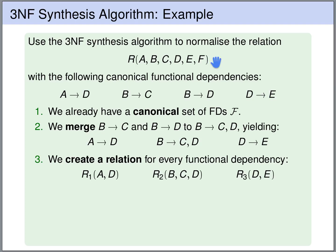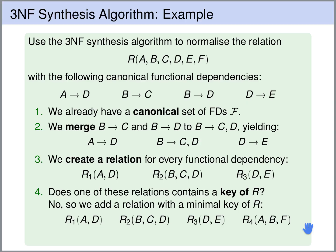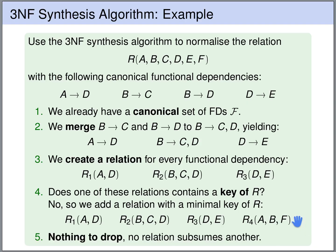So we add a new relation containing this minimal key, namely the attributes A, B, and F. So we have a fourth relation with the attributes A, B, and F. Now finally, we check whether one of the relations is subsumed by another — whether the set of attributes of one relation is a subset of the set of attributes of another. AD is not a subset of any other. BCD is not a subset of any other. DE is not a subset of any other. And ABF is not a subset of any of them, because otherwise we would not have added this additional relation. So none of these relations subsumes another. We are done. This is our third normal form.